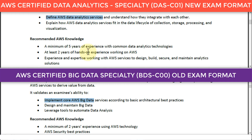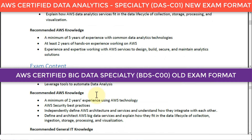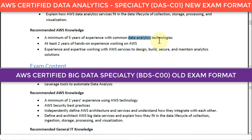Here's the first big difference: the recommended knowledge for the new examination is a minimum of five years of experience with common data analytics technologies. The experience requirement was expanded because the domain knowledge for data analytics is much needed from a practical viewpoint — working with databases, big data, queries, and SQL. The old examination only required a minimum of two years of experience using AWS technology.